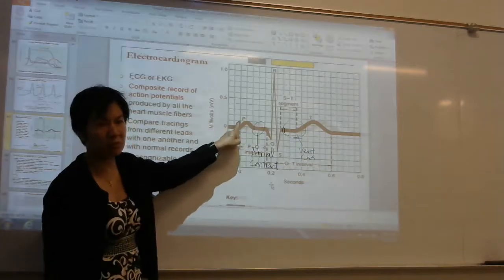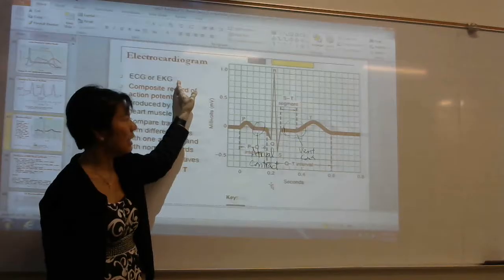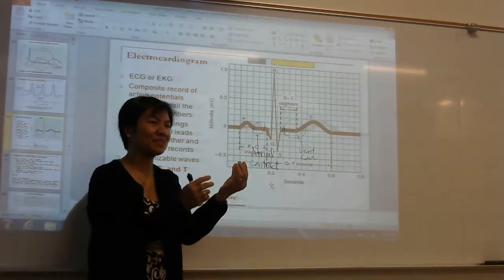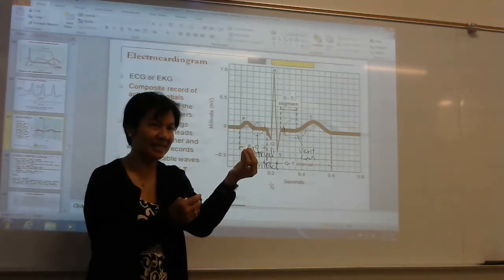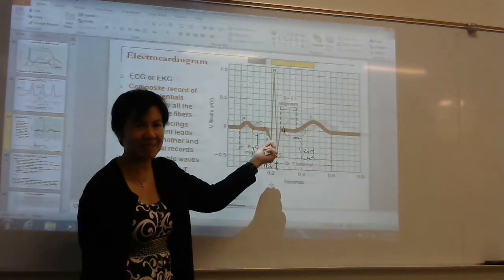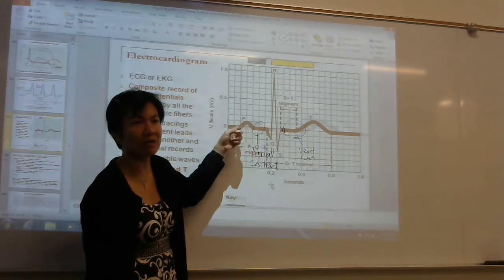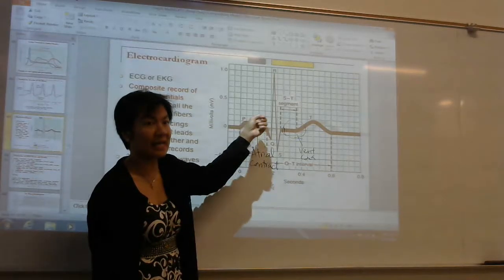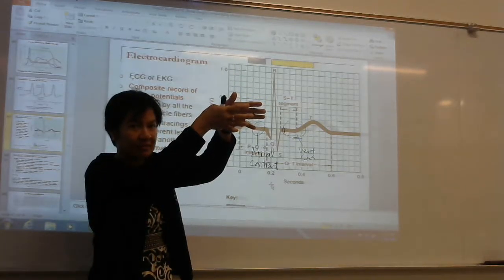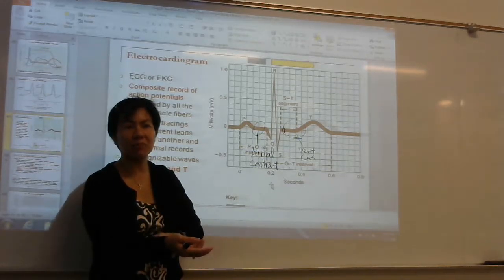You predict P wave problems in the atria. If there's a problem in the QRS — the ventricles are supposed to deliver blood out — you will also predict some congestion, but congestive heart failure will happen first with atrial problems, then ventricular. With QRS problems, you will also predict abnormal heartbeats.